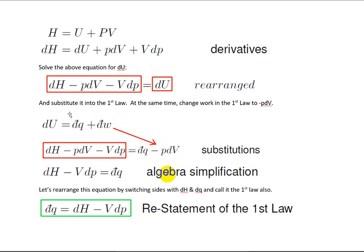Then we're going to do an algebra simplification. Basically, you see that we have minus pdV on both sides of the equation. So we're just going to lose that. That's going to give us dH minus Vdp is equal to dq. Then finally, we're just going to rotate this equation around, and so we will have dq is equal to dH minus Vdp.